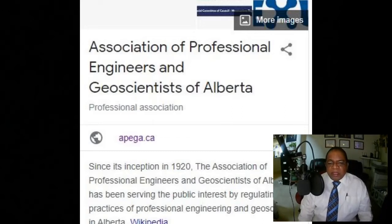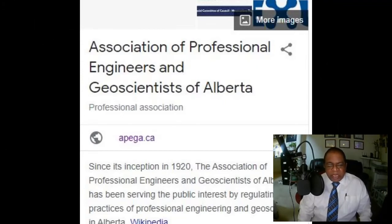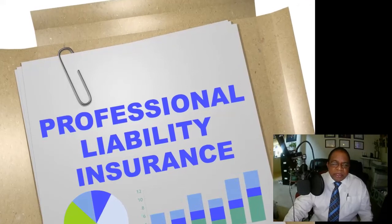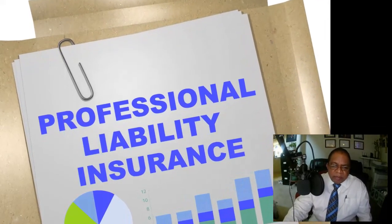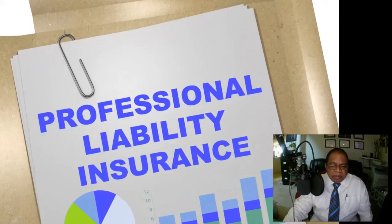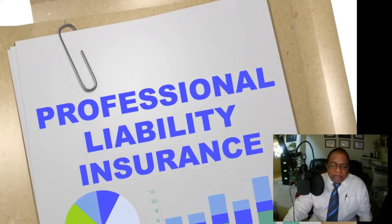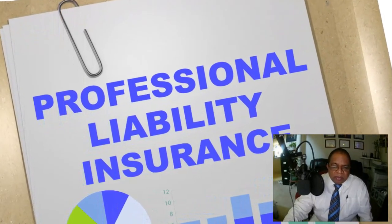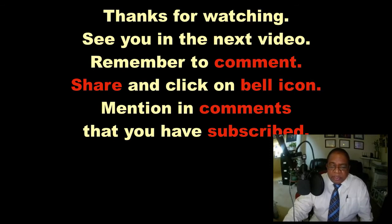For Alberta, the regulating service is called APEGA — the Association of Professional Engineers and Geoscientists of Alberta. The responsible process engineer's name should also be incorporated in the professional liability insurance for the company. You can read more about liability insurance from the APEGA website.